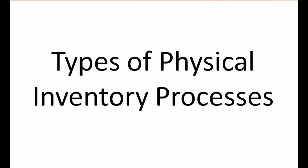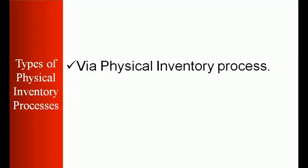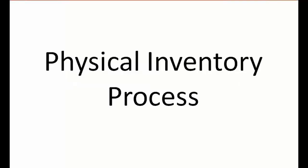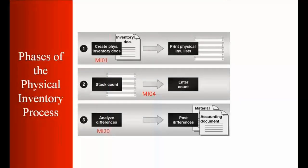Now we'll start with the types of physical inventory process. There are two types: the standard process and via batch input session — I'll be covering both. For the physical inventory process, as you can see on screen, you can divide the steps into three parts. In the first part, we create an inventory document using the MI01 transaction.